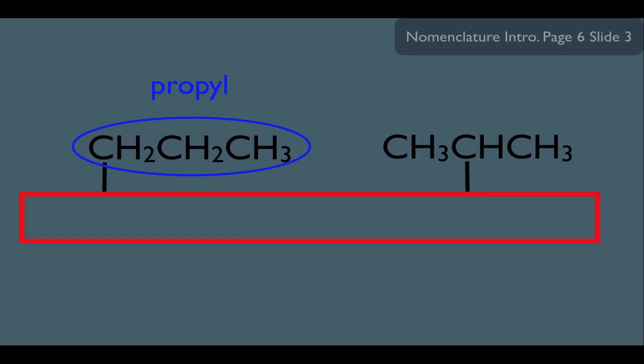But let's say this happens to be a substituent. It is three carbons long, so as a substituent it would be called propyl. However, let's say there's another substituent down the chain that looks like this. Notice this substituent is also three carbons big, but there's a slight difference. Notice where the carbon in the substituent connects to the main chain. It actually connects to the second carbon within the substituent.